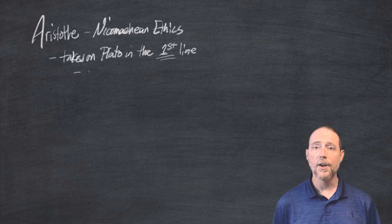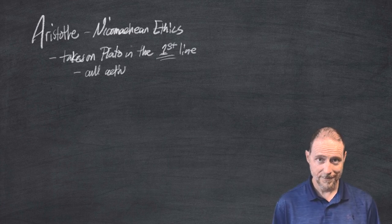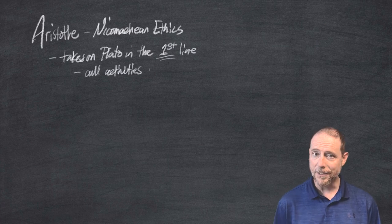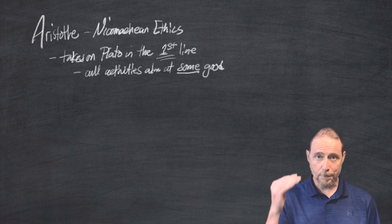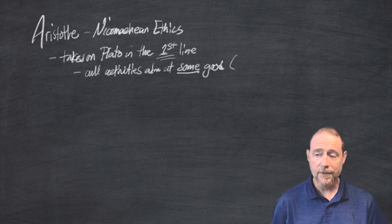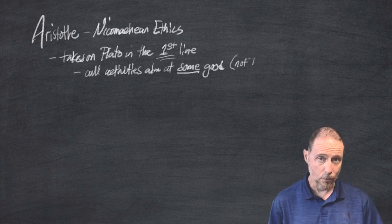Aristotle tells us that all human activities aim at some good. So they don't aim at the good, they aim at some good. For Plato, as you might recall, the good was the form. It was the pinnacle of the forms by which all of the other forms got any kind of being or meaning.